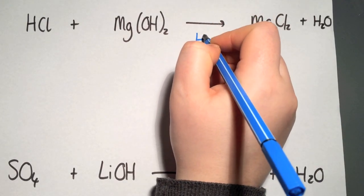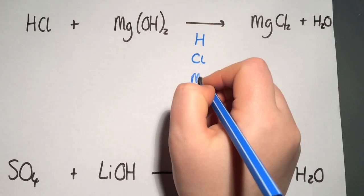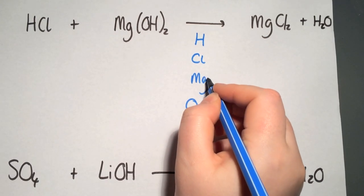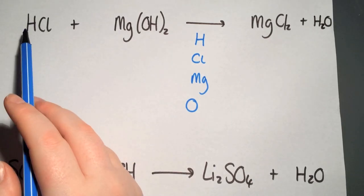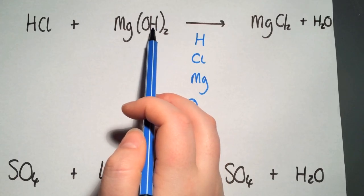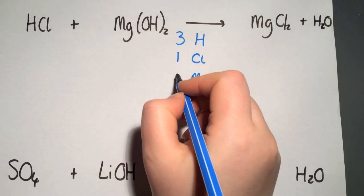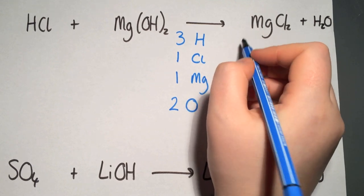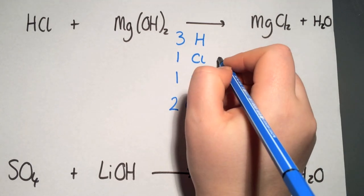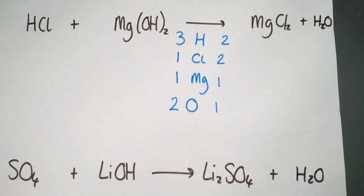We write down the elements present: hydrogen, chlorine, magnesium, and oxygen. The hydrogen has already been taken care of, so when counting elements you have to be careful that hydrogen is included in two different species. We have one hydrogen here and two times one, so that's three in total; one chlorine; one magnesium; and two times one oxygen. On the other side we have one magnesium, two chlorines, two hydrogens, and one oxygen.